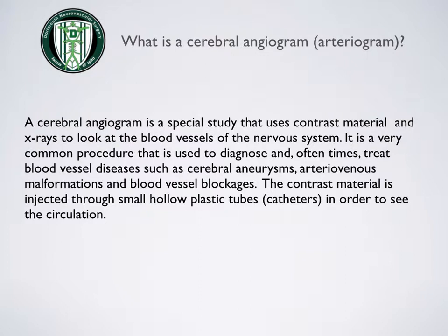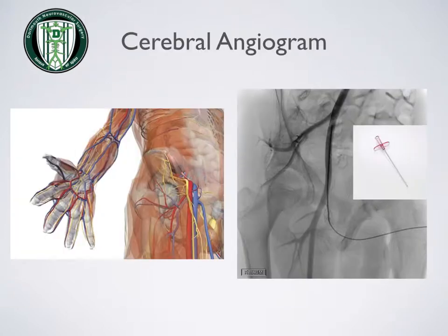The contrast material is injected through a small hollow plastic tube or catheter in order to see the circulation. The picture on the left demonstrates a common access point which is the right femoral artery — the dark red line by the leg.